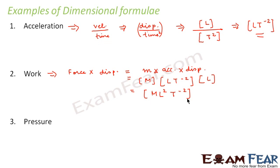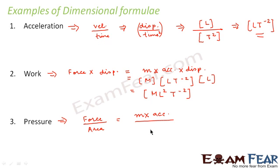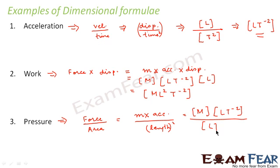Let us find the dimensional formula for pressure. Pressure is force per unit area. Force is mass into acceleration, and area is length squared. So we write M times L·T⁻² divided by L², which simplifies to M·L⁻¹·T⁻². This is the dimensional formula for pressure.